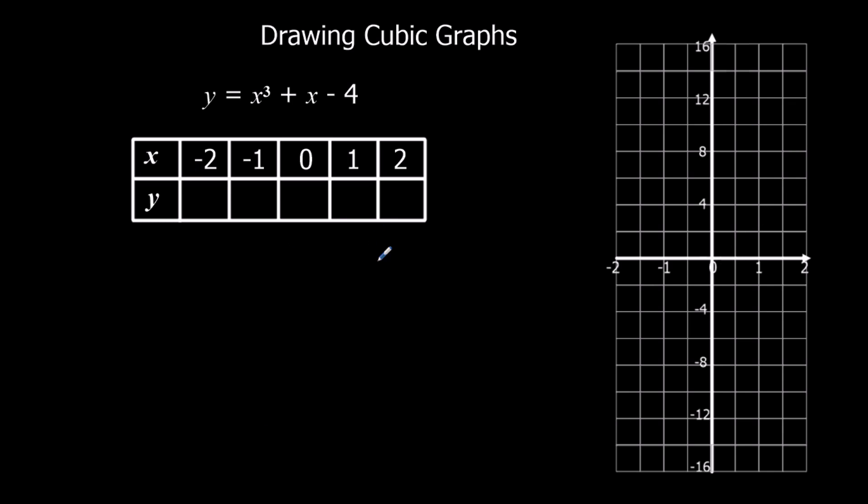Okay, here's another example. So again, if you had a calculator, you can do exactly the same thing as before. Wherever the x is, you put the brackets and substitute in the numbers. We're not going to use a calculator. So 2 cubed is 8, plus 2 is 10, minus 4 is 6.